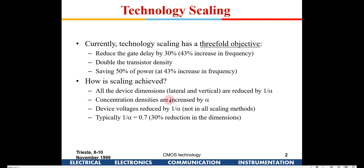In scaling, the device dimension is laterally and vertically reduced by a factor alpha. Concentration densities are also reduced by alpha, and device voltage is also reduced by a factor alpha. Alpha is generally about 0.3 per generation, meaning 1 by alpha is around 0.7 — so there is about a 30 percent reduction per technology node.